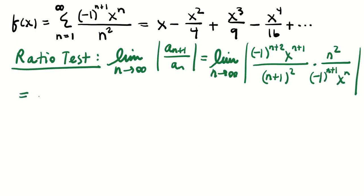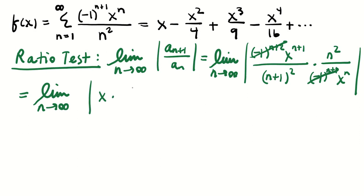We start to cancel. We ignore the (−1) factors since we're taking absolute value. x^(n+1)/x^n leaves just one power of x in the numerator, and we're left with n²/(n+1)².